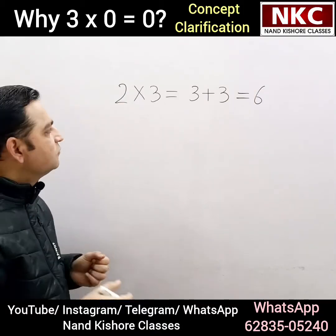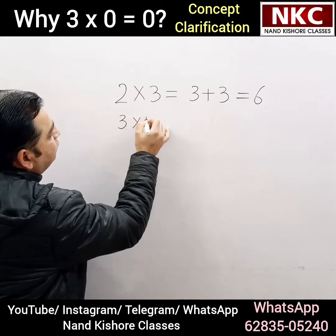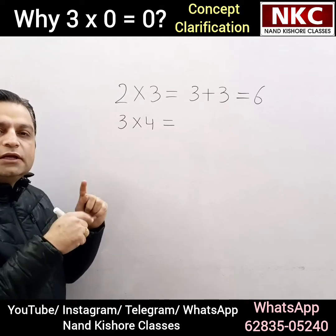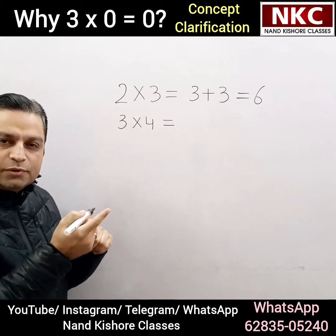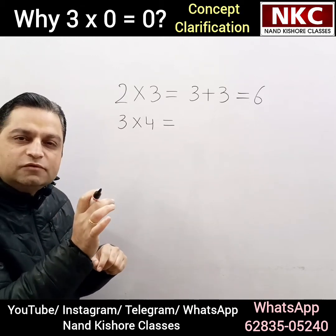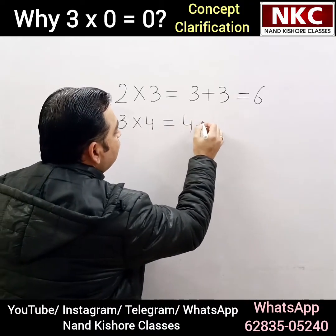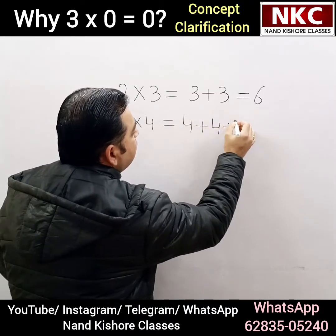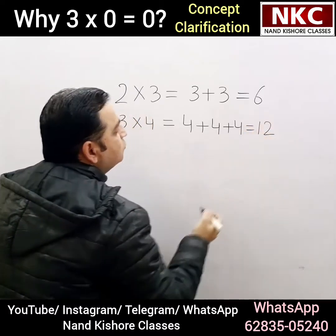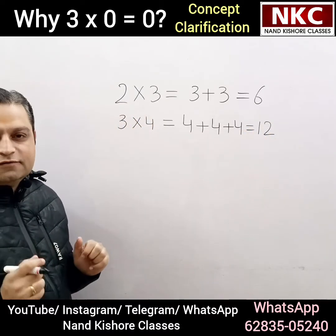Working on this basic concept, let's suppose we have 3 times 4. Now 3 times 4 means 4 is being added how many times? Three times. So let me add 4 three times: 1, 2, 3 — which gives me 12 as an answer. I hope you are understanding it.